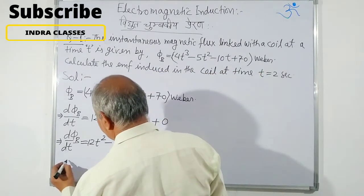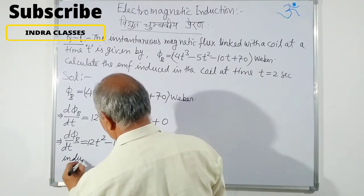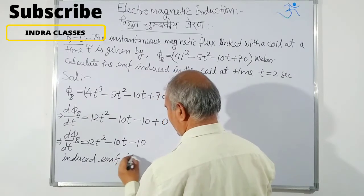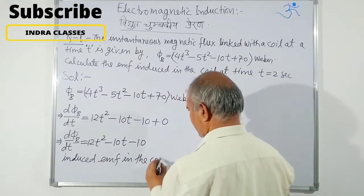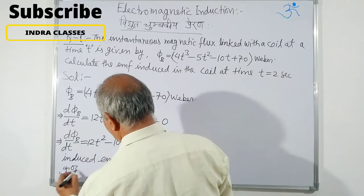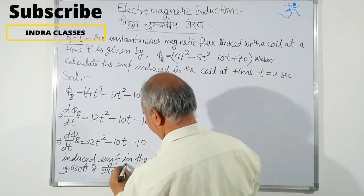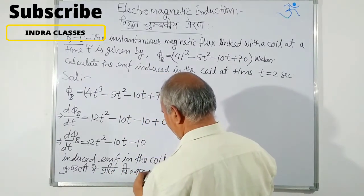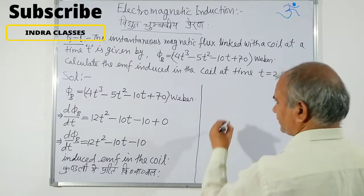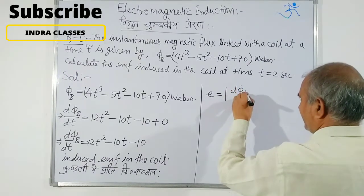The induced EMF in the coil — Kundalini prerit vidyut vahagval. Here is the formula: induced EMF E is equal to −dφ/dt.